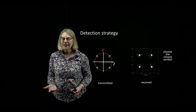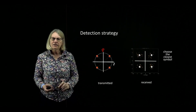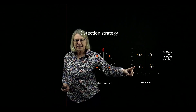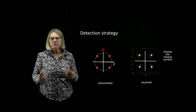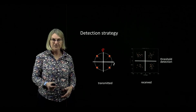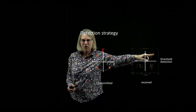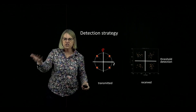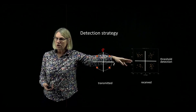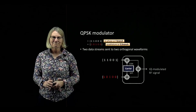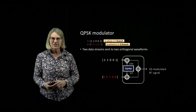Looking at QPSK, there are four quadrants and these clusters fall in different quadrants. Instead of making expensive calculations measuring distance to each symbol, I can do something very simple called a threshold test — I just look at which quadrant the received point is in. Is it bigger than zero on this dimension? Bigger than zero on this dimension? Then I make the corresponding choice. So the detection strategy for QPSK is choosing the closest symbol, but when implementing it, we can do it very low complexity using threshold detection.